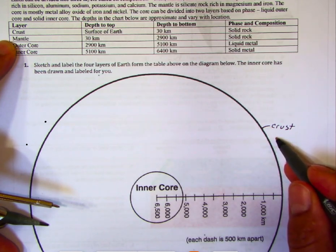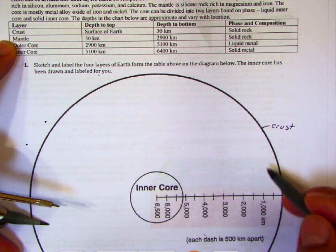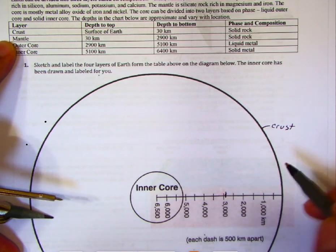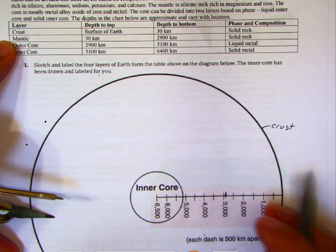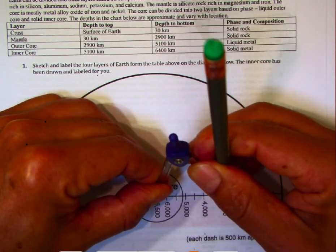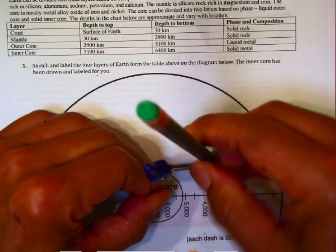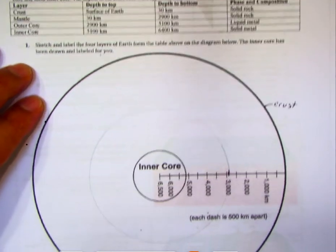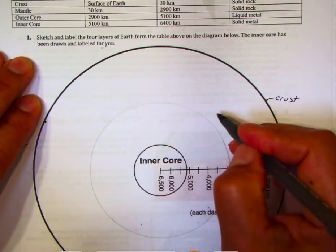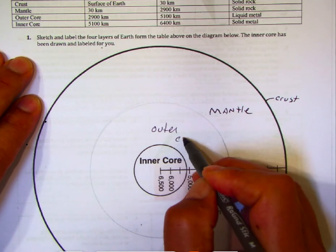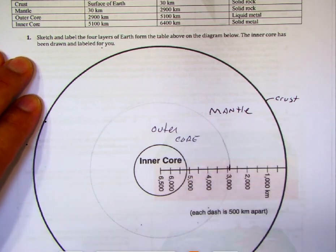The mantle goes from 30 to 2,900 kilometers depth, so we draw a circle down to 2,900 kilometers. Then we have the outer core, and the inner core has already been drawn in. So we now have all the layers labeled.